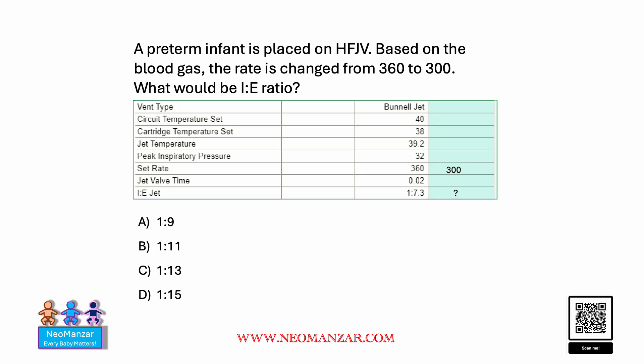Hello everyone. Let's try to solve this question together. A preterm infant is placed on a high-frequency jet ventilator. Based on the blood gas, the rate is changed from 360 to 300. What would be the I:E ratio?